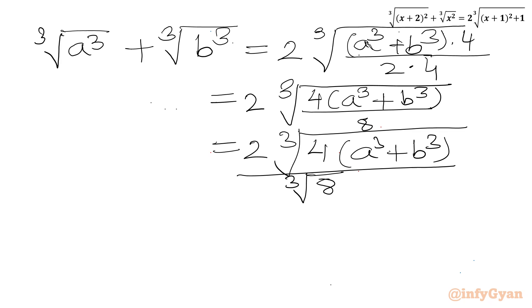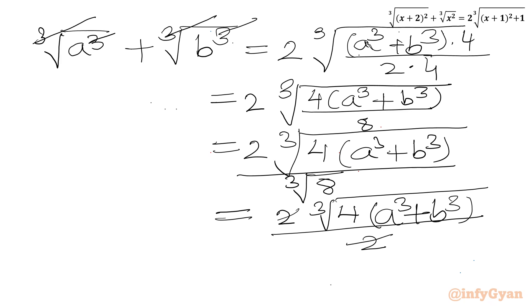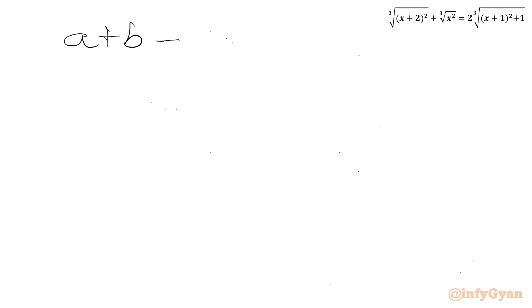Now cube root of 8 is 2. So I can write 2 times cube root of 4(a³ + b³) over 2. The 2 and 2 cancel. Now we can also cancel the cube root and cube on the LHS, giving us a + b equal to cube root of 4(a³ + b³).